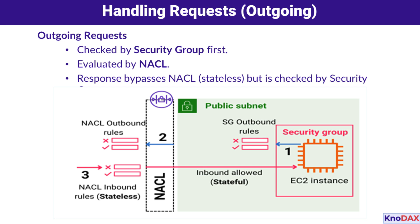Security groups are stateful, so if a response is expected for an already allowed request, it doesn't need another rule to handle the response. The security group evaluates its outbound rules, and if the request matches an allow rule, it moves on to the next layer — the NACL. In step two, the request hits the NACL's outbound rules. Unlike security groups, NACLs are stateless, meaning they don't remember anything about the request. Both the request and its response must explicitly match rules in the NACL. If the request matches an allow rule, it is forwarded out of the subnet.